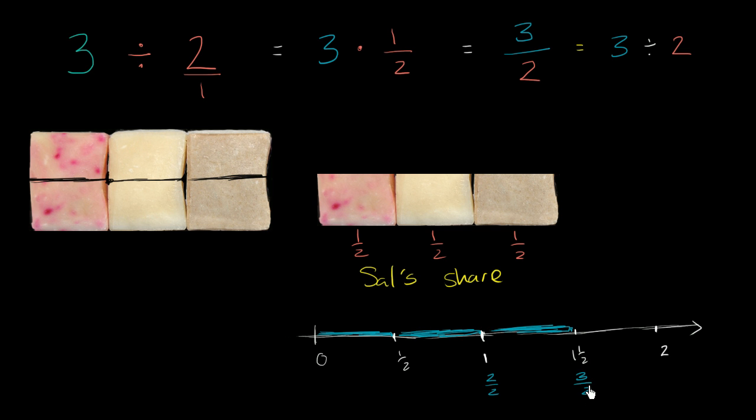And we see three halves is the exact same thing as one and a half. And just to hit that point home, we already saw that three halves is the same thing as three divided by two. If you were to divide three by two, you would get, well, two goes into three exactly one time. And then what would you have left over? Well, you would have one half left over.